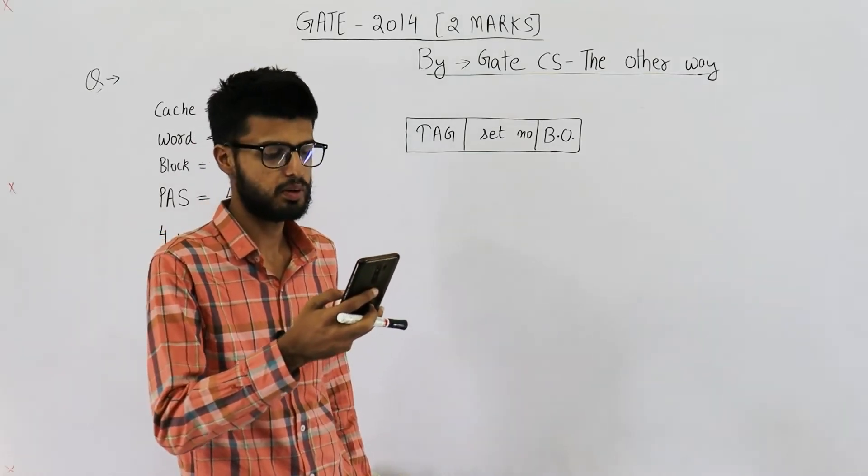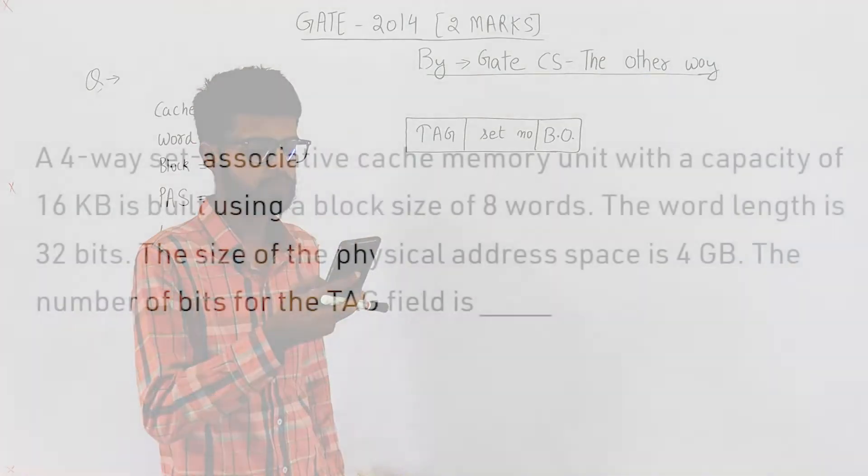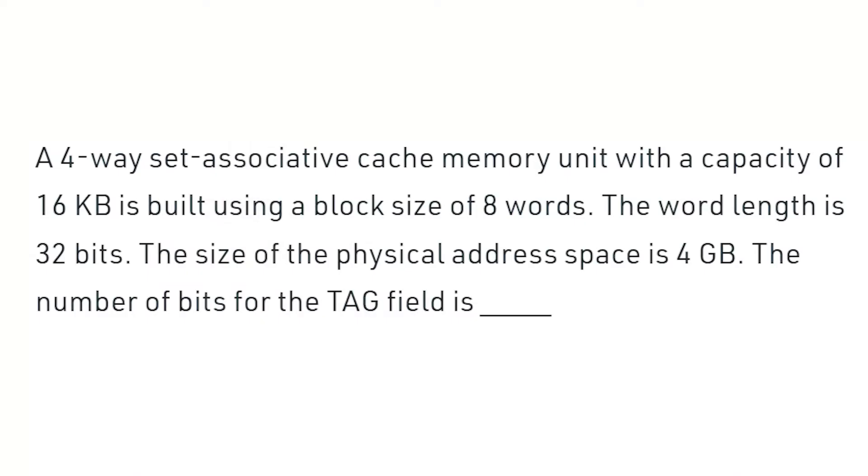But before that, let me read out the statement. A 4-way set associative cache memory unit with a capacity of 16 KB is built using a block size of 8 words. The word length is 32 bits. The size of physical address space is 4 GB. The number of bits for the tag field is?